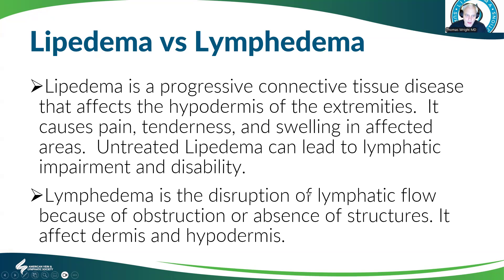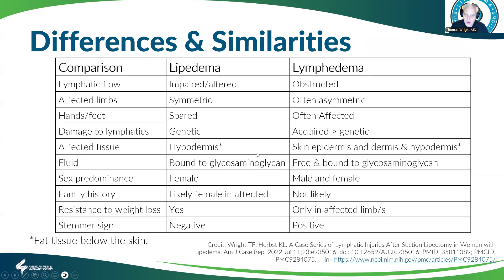So lipedema versus lymphedema: lipedema is that progressive connective tissue disease in the extremities, and lymphedema is the disruption of the flow — it affects the dermis and the hypodermis. In comparison, we emphasize that lymphatic flow is obstructed in lymphedema, but in lipedema, initially the lymphatic flow is actually increased and then may become impaired later.